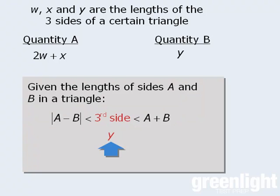So if we say that Y is the third side, then the rule tells us that Y is greater than the absolute value of W minus X, and Y is less than W plus X.